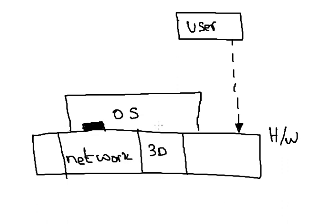Similarly, for 3D graphics, if you send some commands to draw certain geometric figures, these functions will do it for you. If you tell them to draw a rectangle, they will do it for you on the screen. If you instruct them to draw a triangle, they do it for you.